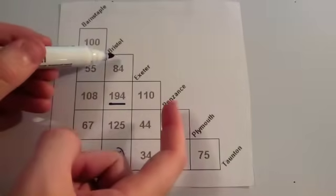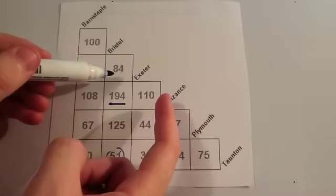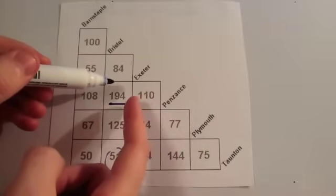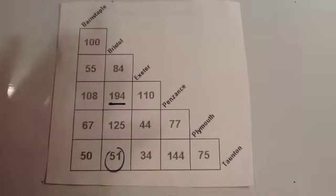You can see then that would be what you would get if you followed down the Bristol column and followed left from the Penzance row. That means that Bristol and Penzance are the two cities that are the furthest apart.